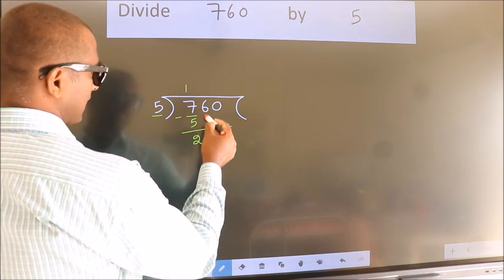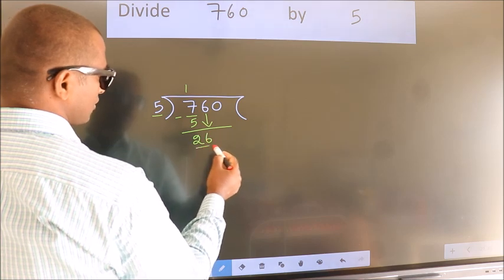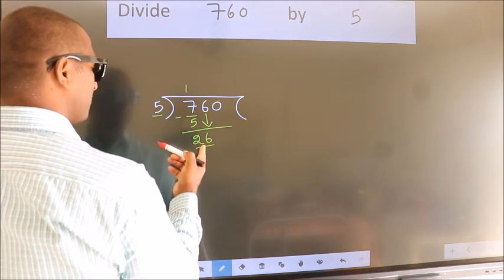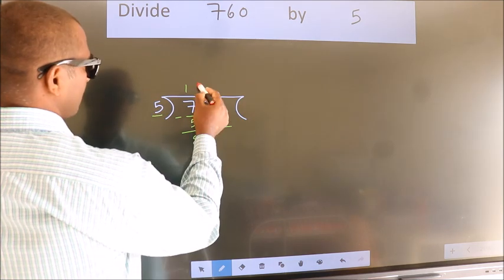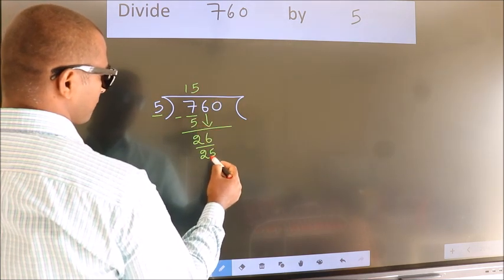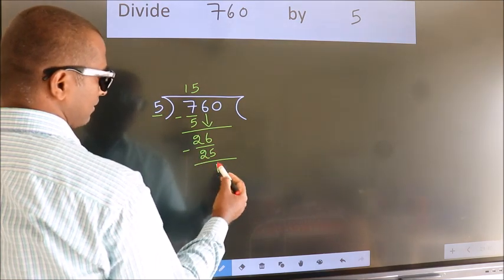After this bring down the beside number. So 6 down. So 26. A number close to 26 in the 5 table is 5 fives 25. Now we subtract. We get 1.